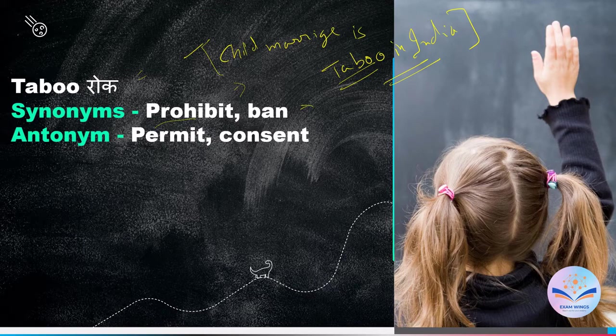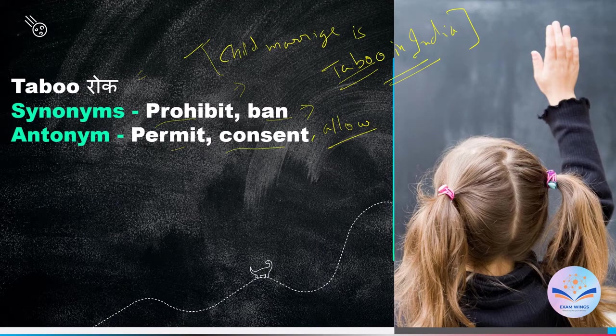Ban — prohibit. Antonyms of taboo are 'permit' and 'allow' — meaning something that is allowed or permitted. So prohibit and ban are synonyms, and permit is the antonym.